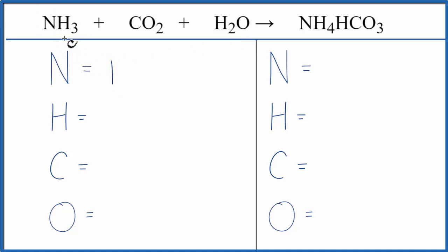One nitrogen. Hydrogens, we have three and we have the two over here. So let's count those all up to get five. Carbons, we have the one, and oxygens, we have the two plus we have the one here. So we have three oxygens.